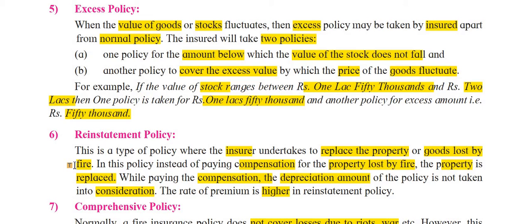Under the excess policy, the insured takes two policies: one normal policy and one excess policy. The normal policy covers the base value of goods, but if the value of goods fluctuates, the additional excess policy covers it. So one policy covers the amount below which the value of stock does not fall, and another policy covers the excess value by which the price fluctuates.